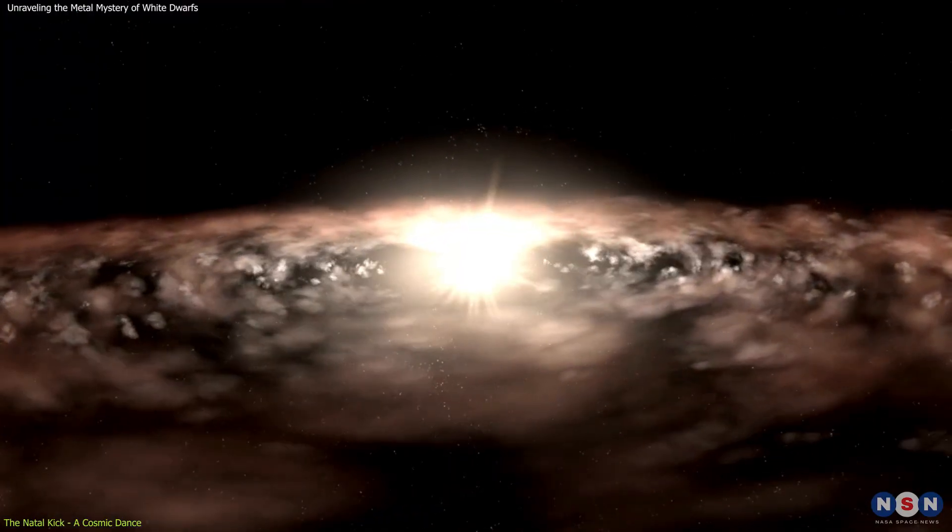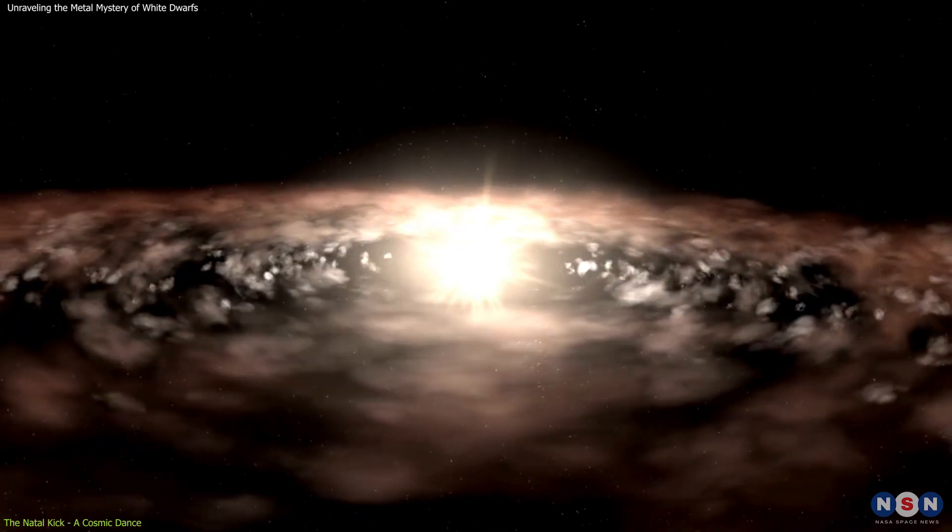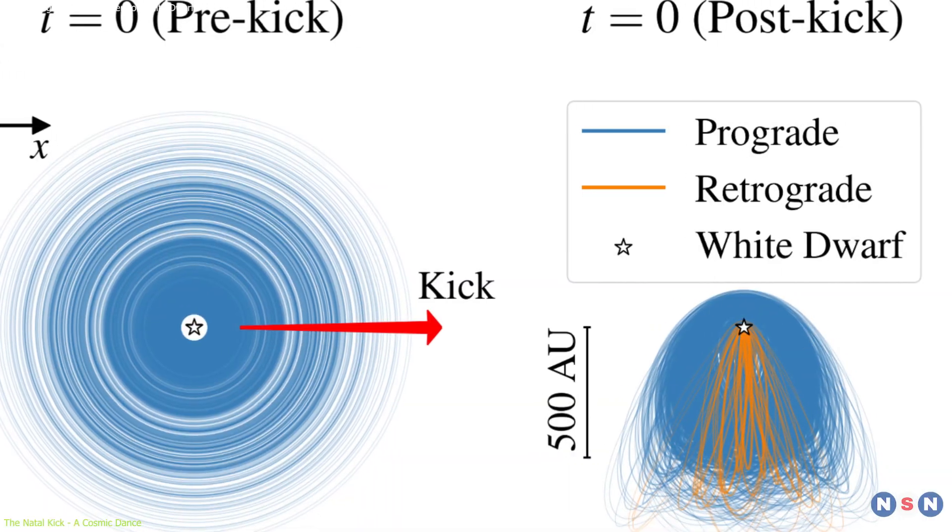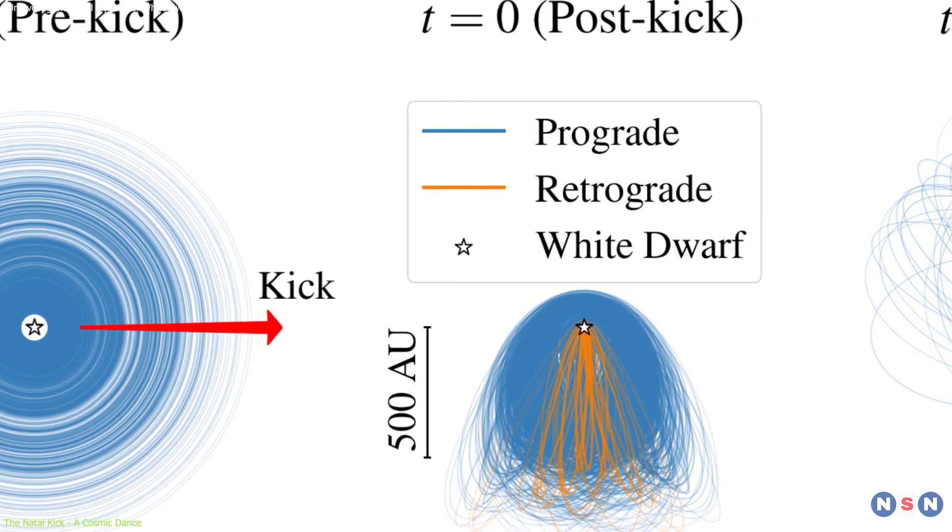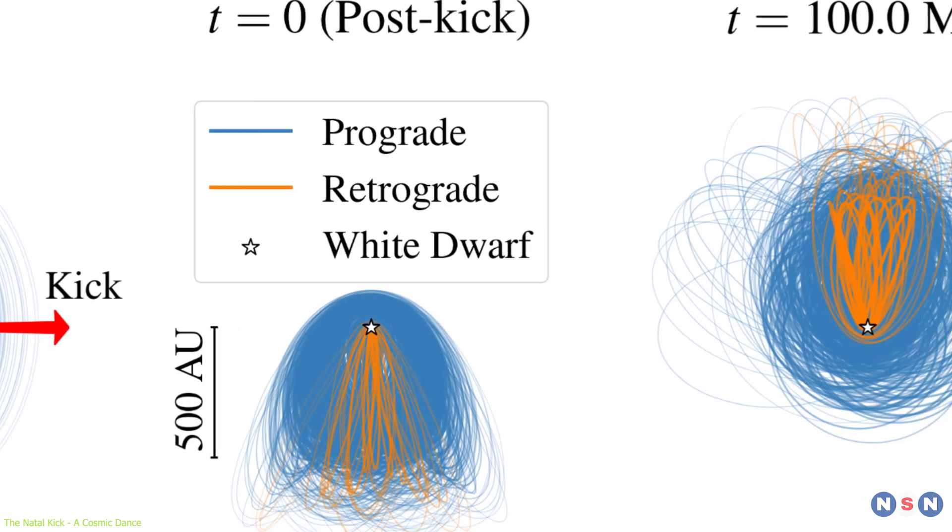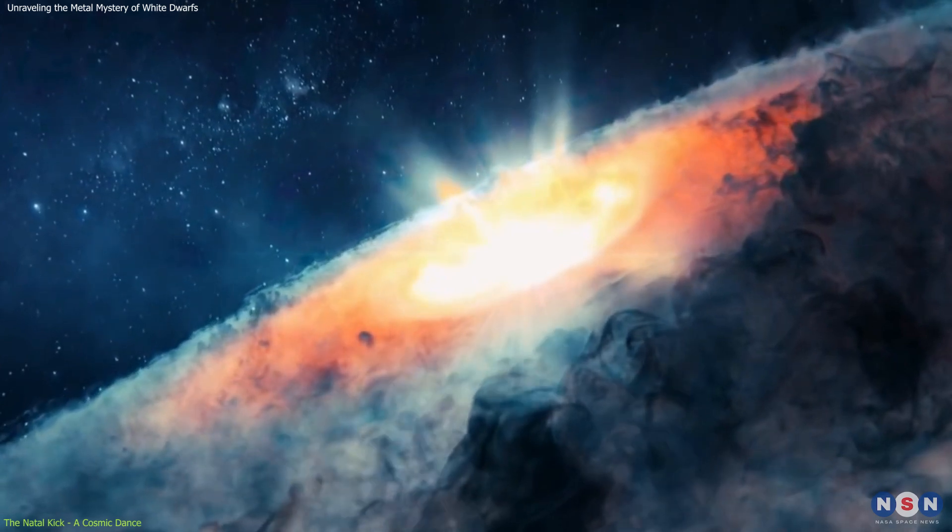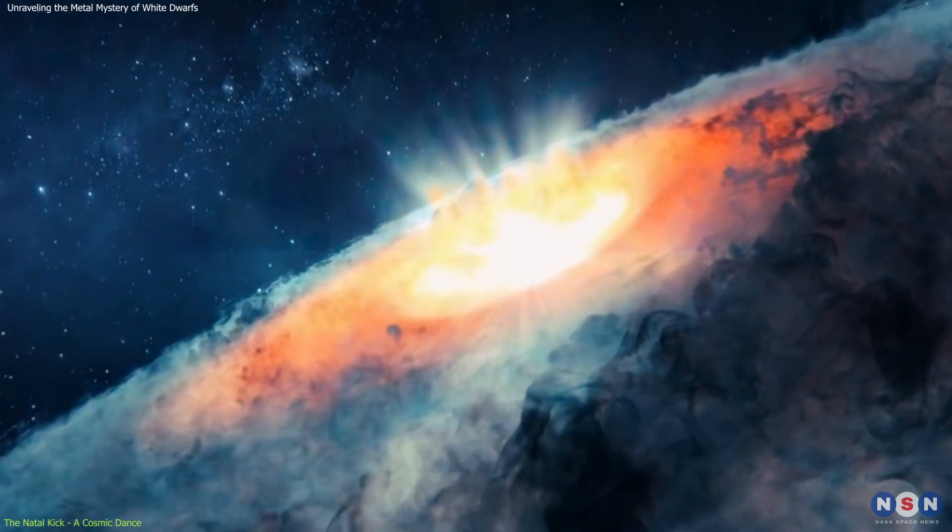increasing the likelihood that these objects will be drawn into the white dwarf's gravitational field. In about 80% of simulation scenarios, the orbits of these objects become highly elongated and aligned in a specific manner. This alignment increases their chances of being pulled into the white dwarf's gravitational well.